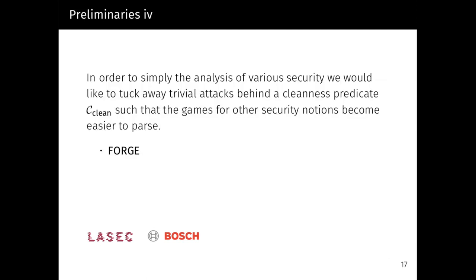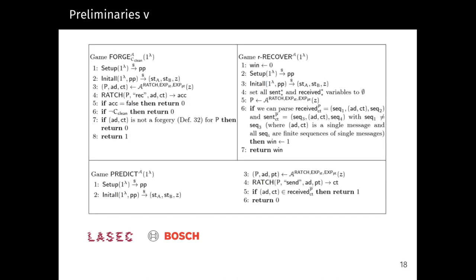In order to simplify the analysis of various security properties, we would like to tuck away trivial attacks, for example trivial forgeries after a state exposure, behind a cleanness predicate C_clean, such that the games for the other security notions become easier to parse. Specifically, we are interested in FORGE security, resistance against forgeries; r-RECOVER security, detecting a forgery through the inability to receive further genuine messages; PREDICT security, the inability for an adversary to guess the ciphertext; and most importantly IND-CCA security for confidentiality. Having such a predicate simplifies our games significantly. For example, in the FORGE game, the adversary has access to a send and receive oracle, a state exposure oracle, and a plaintext exposure oracle, and his goal is to make a message accepted by some user according to some cleanness predicate. In the r-RECOVER game, the goal of the adversary is to create divergence in the sent and receive list of the users that goes unnoticed.